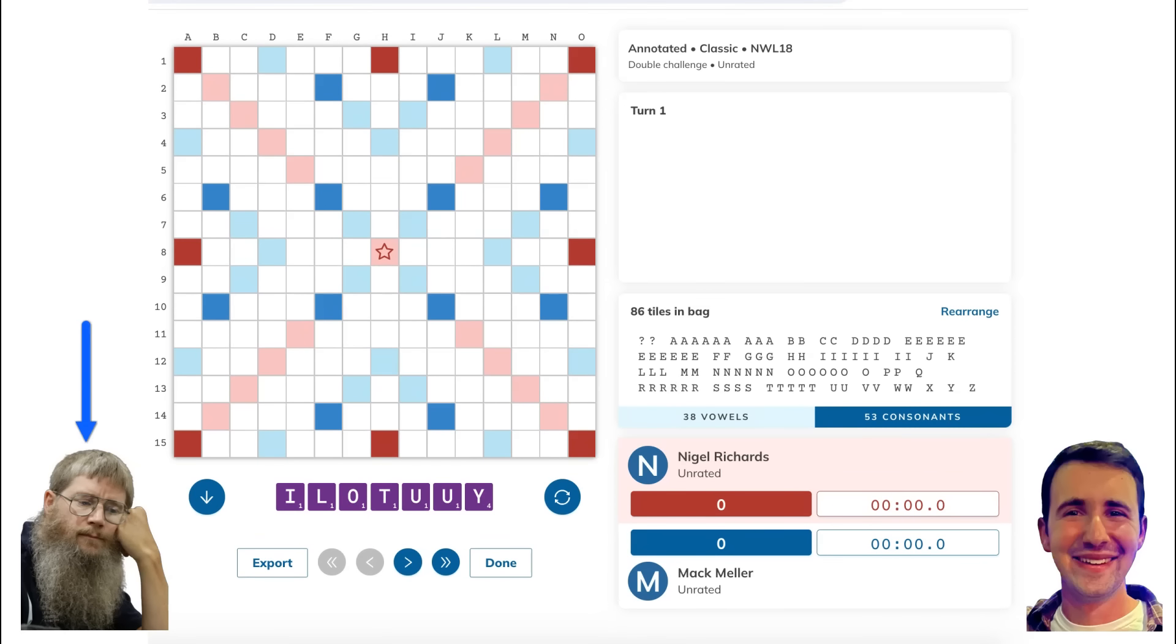Nigel was first this game, and with a fairly clunky opening rack of I-L-O-T-U-U-Y, he started off the game with a very Nigel-esque decision right off the bat. A standard player might play something like the word ULU for 12 points, unloading the Y and one of the duplicate U's, scoring a couple points, and keeping the mediocre leave of I-L-T. Another option might be to exchange a bunch of tiles, since this is a pretty clunky rack and it's still early in the game when you do want to be vying to bingo as soon as possible.